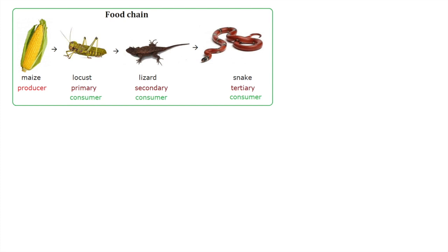We can talk about these roles in a food chain as trophic levels — the levels in the food chain occupied by a certain population. In this example, the maize are the first trophic level because they are the producers. The locusts are the second trophic level because they are the primary consumers — the herbivores — and they eat the producers.